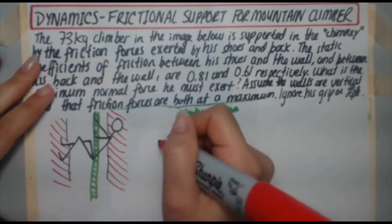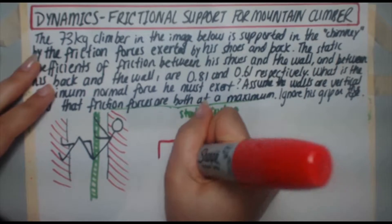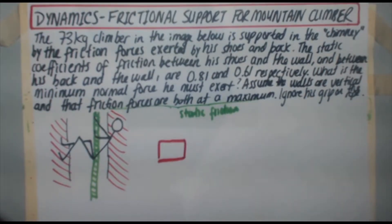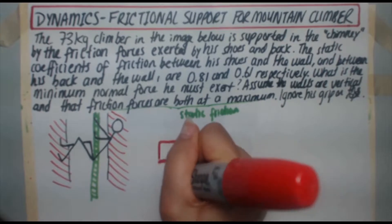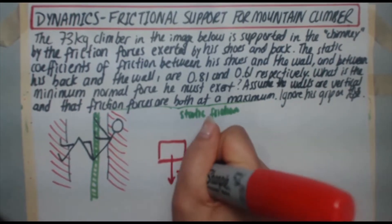I'm going to keep it super simple. I'm going to draw the mountain climber as a box, of course, because that's the easiest way to do it. And simplest force, first force I'm going to draw, he's got mass, of course, therefore there's a force from gravity going straight down. So we've got FG.